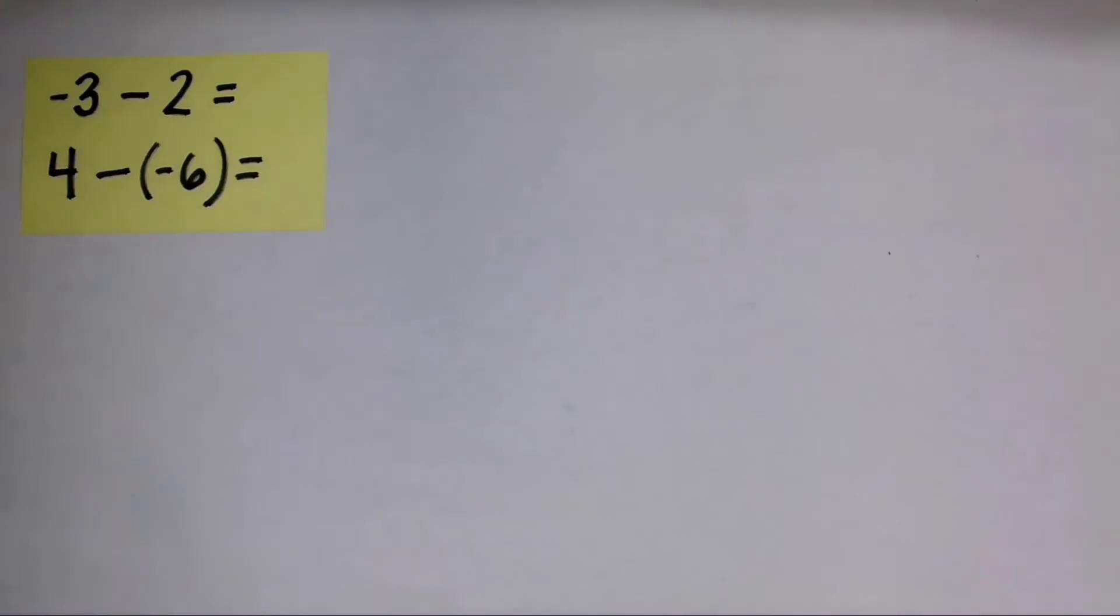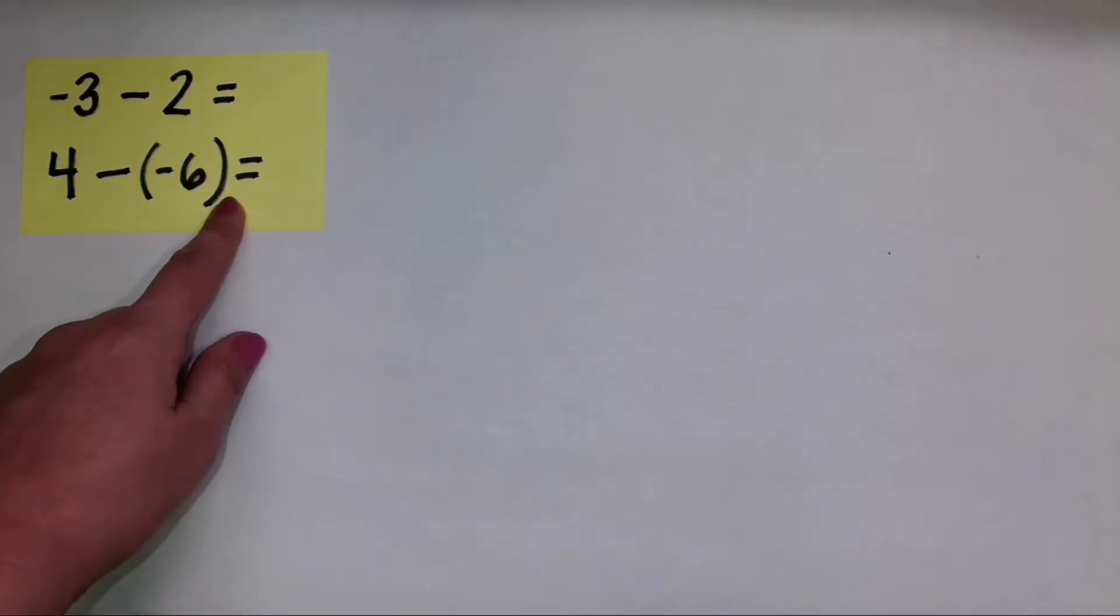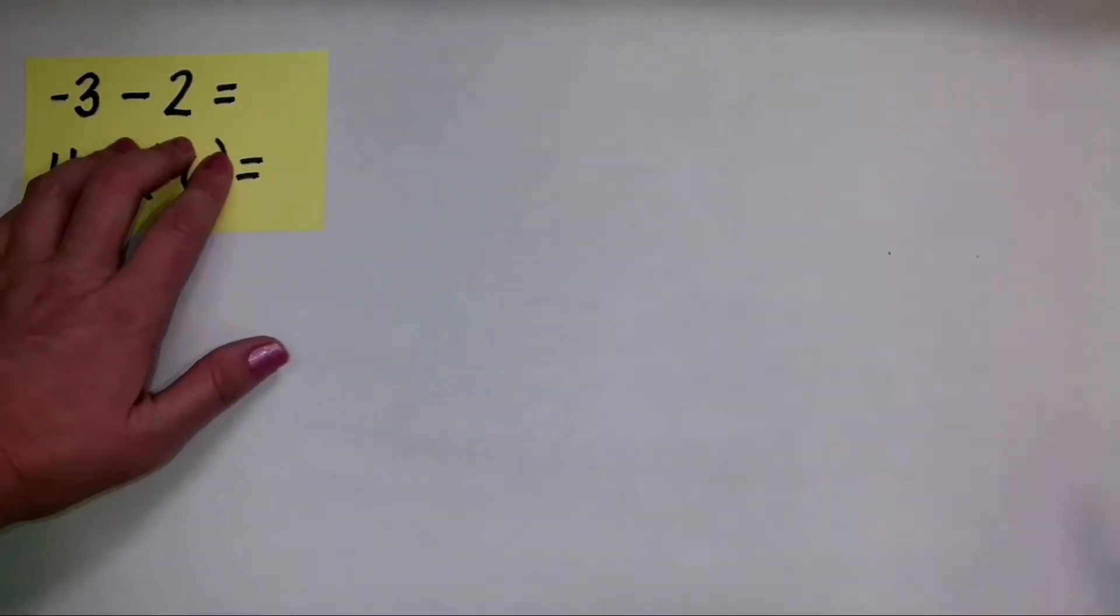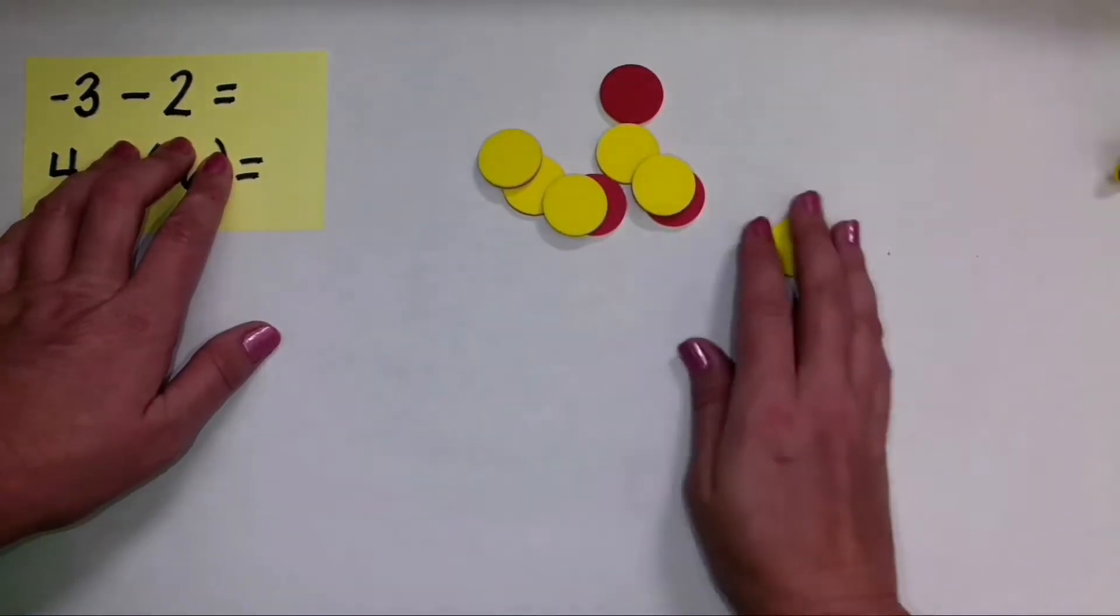All right, so we're doing the problems negative three minus two, and four minus negative six. Let's focus on negative three minus two. Now when we use the two-color counters, two-color counters look like this.